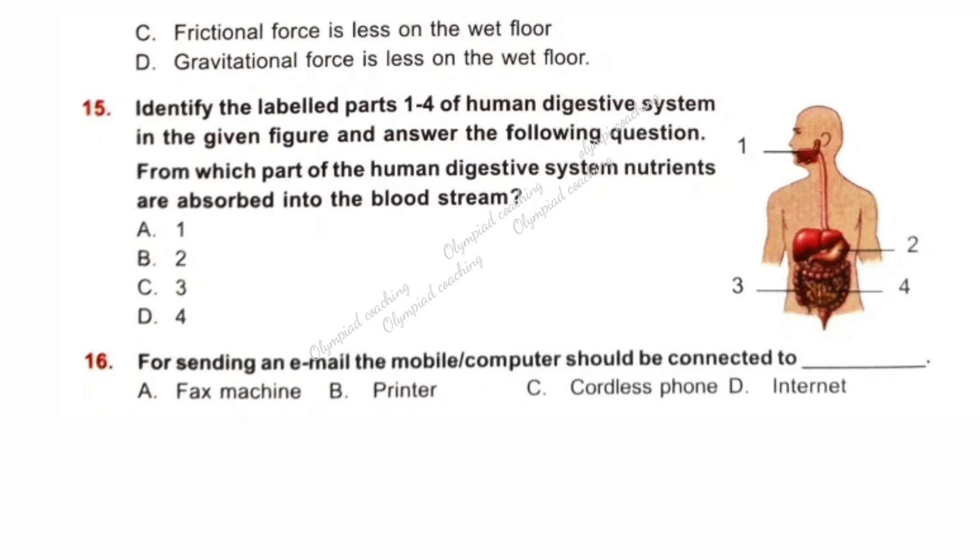Question number 15. Identify the labeled parts 1 to 4 of human digestive system in the given figure and answer the following question. From which part of the human digestive system nutrients are absorbed into the bloodstream? This is small intestine. Number 4 is small intestine. 3 large intestine. 2 stomach. 1 mouth. Question number 16. For sending an email, the mobile or computer should be connected to? It is internet. Mobile or computer should be connected to internet.